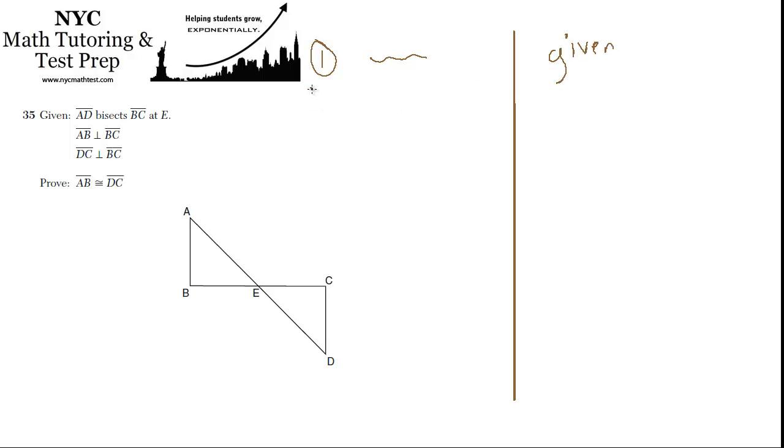The second step, we'll do a line and figure out what that's going to be. We have all this given stuff. If AD bisects BC at E, then BC is being bisected at E, so BE must be congruent to EC, since BC is being bisected.